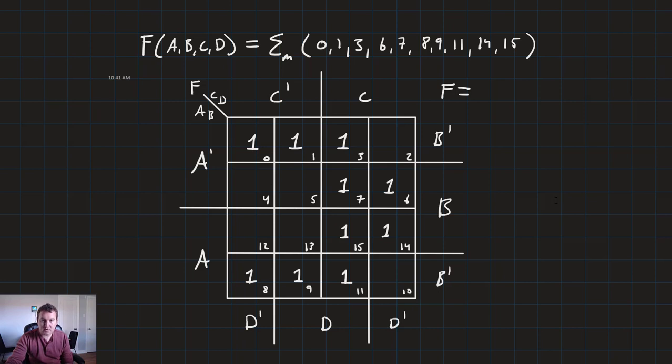Remember our groups can be of size powers of 2, 1, 2, 4, 8, 16. So we go ahead and group that guy. That's going to get us, let's see, it fits inside the C column and in the D column, but it splits the B's and the A's. So that's just going to be equal to C and D.